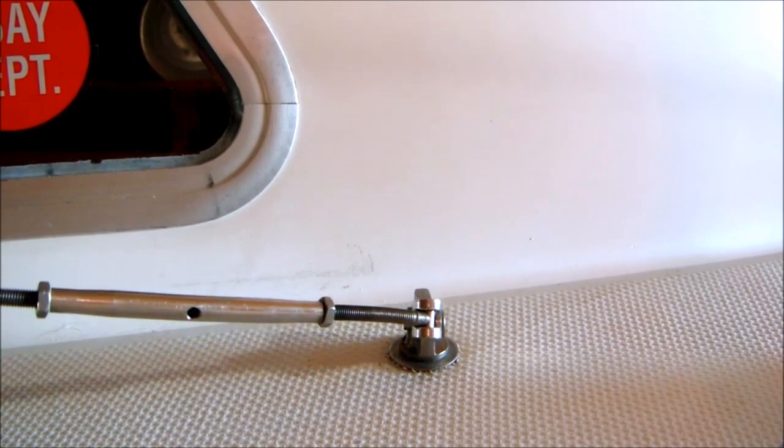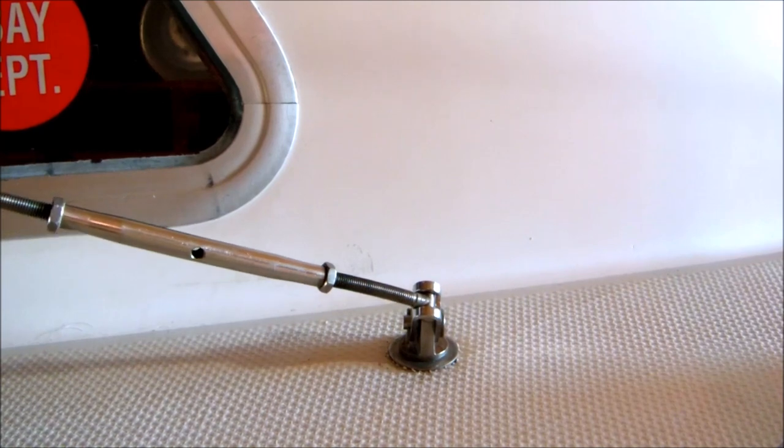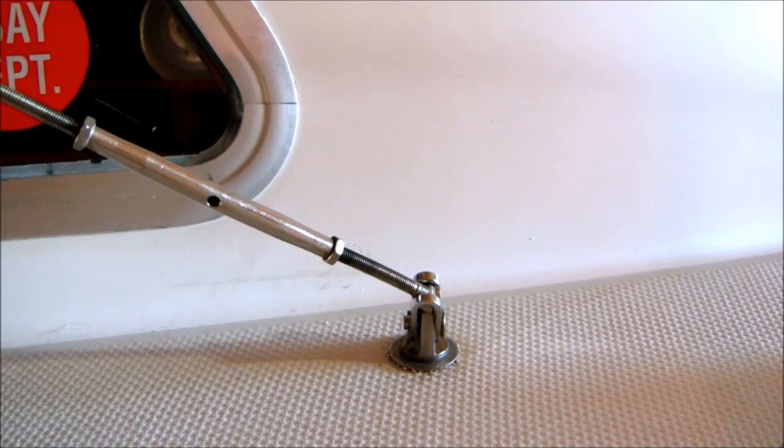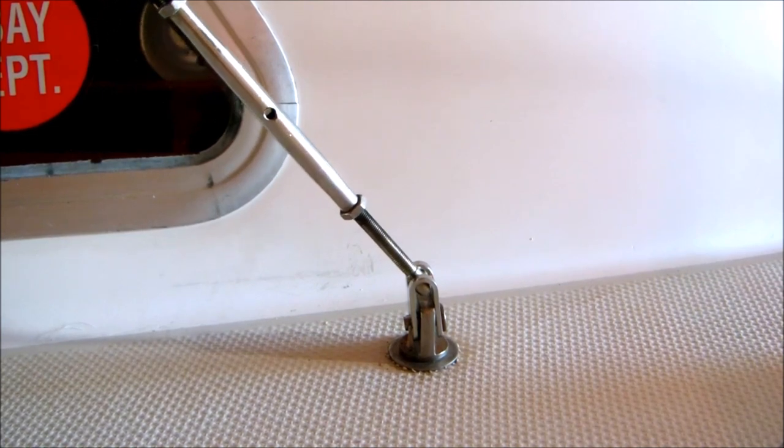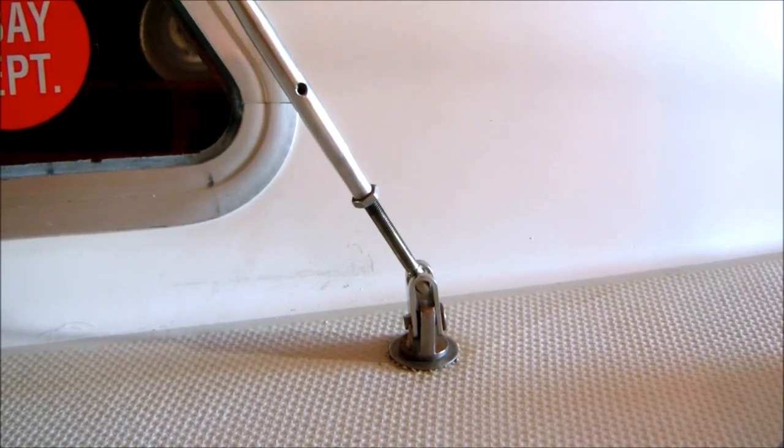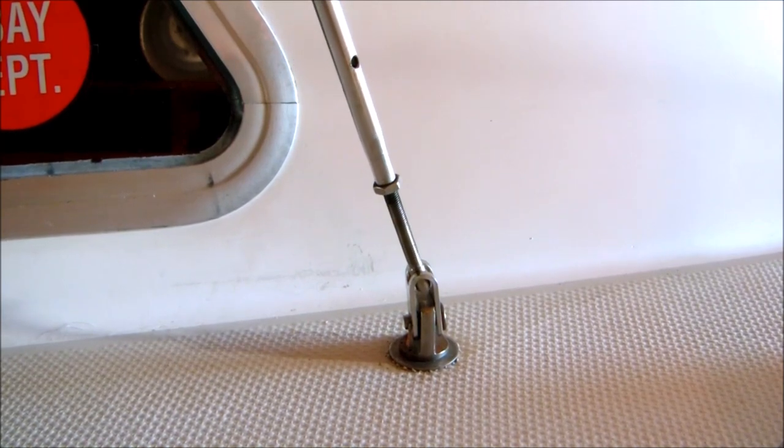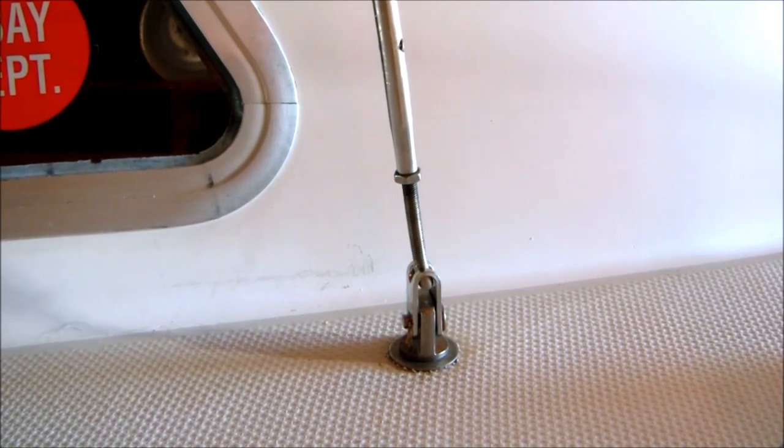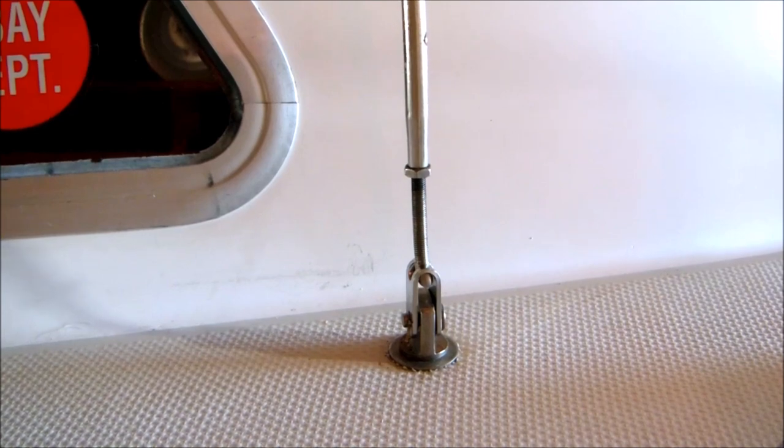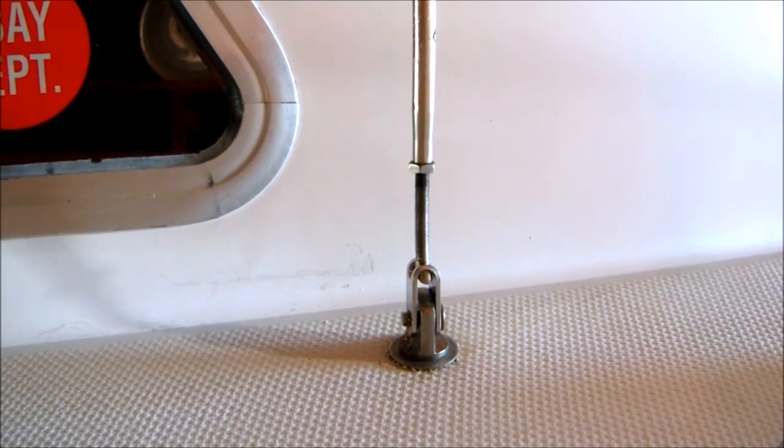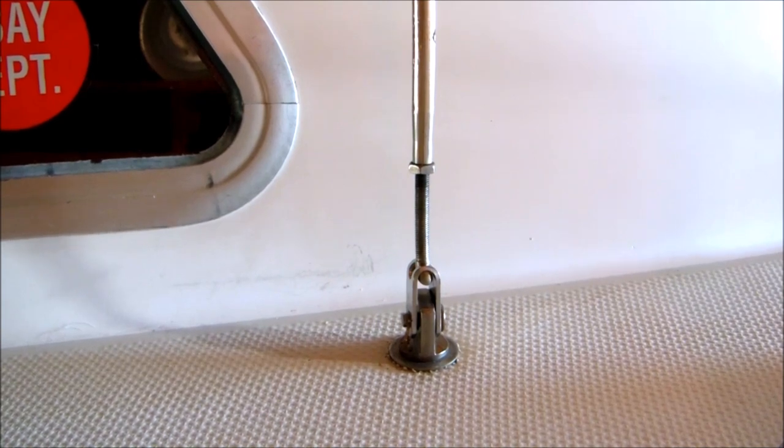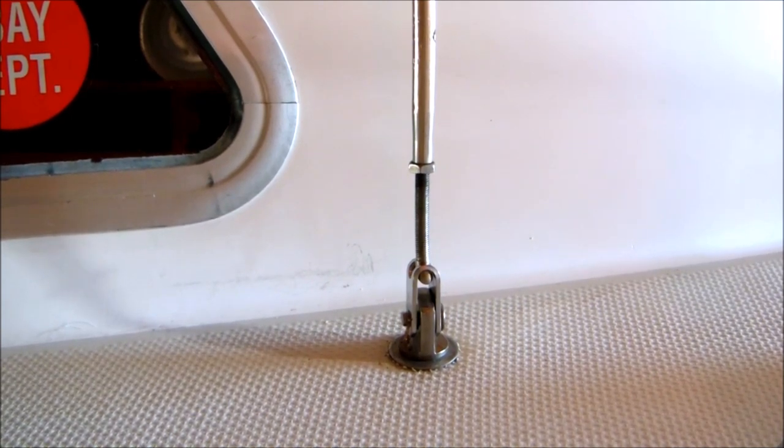As the shrouds begin to raise, the turnbuckle T-bolts will twist the toggle until it becomes vertical with the chain plate eye, and then the T-bolt will rotate in the toggle itself until the turnbuckle is vertical. Then the turnbuckle will angle inboard and the entire load of the shroud through the turnbuckle will be transmitted to the chain plate bolt and can rotate on the clevis pin.